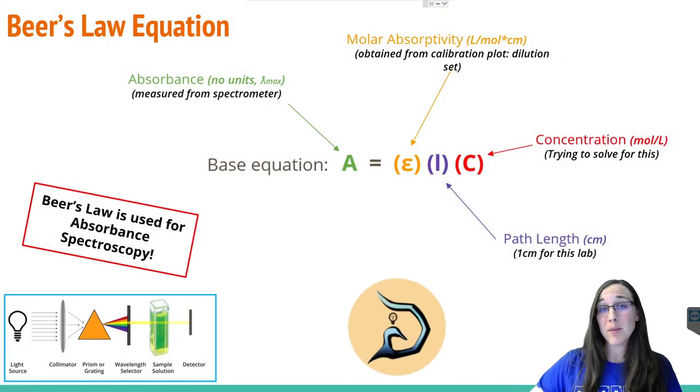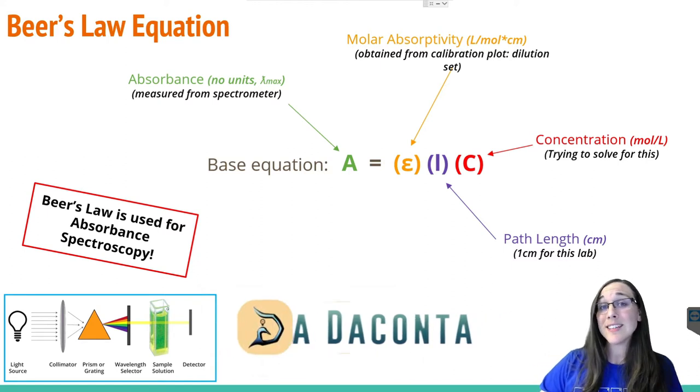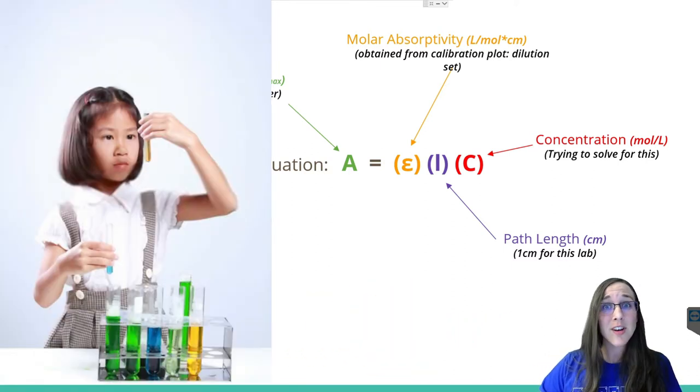Beer's Law is a unique mathematical setup that we use for absorbance spectroscopy. It's very useful in that it relates absorbance and concentration together so that we can determine the concentration of an unknown chemical sample.